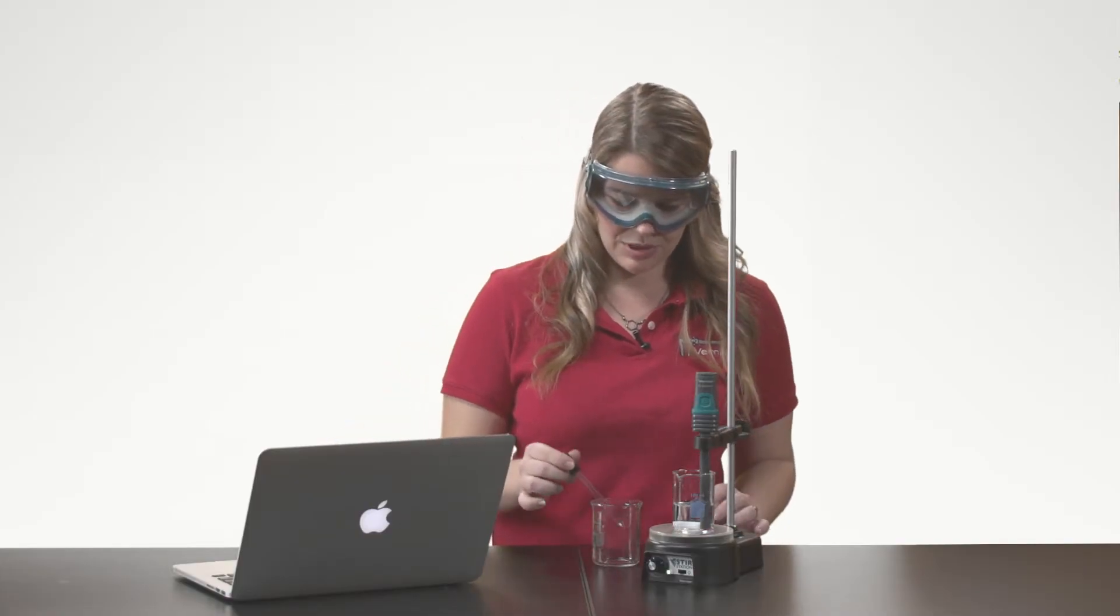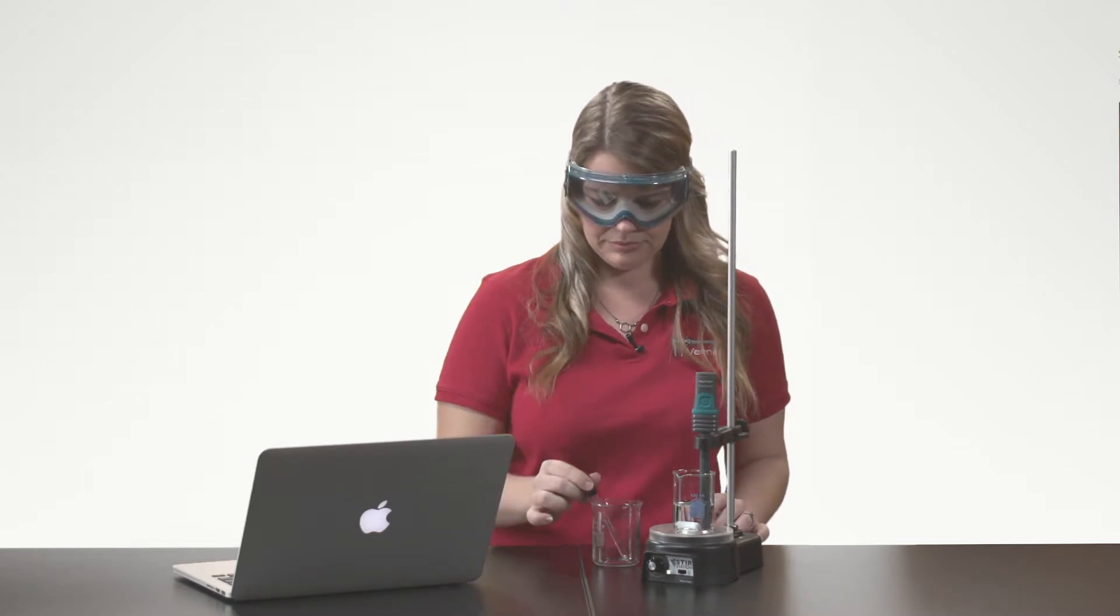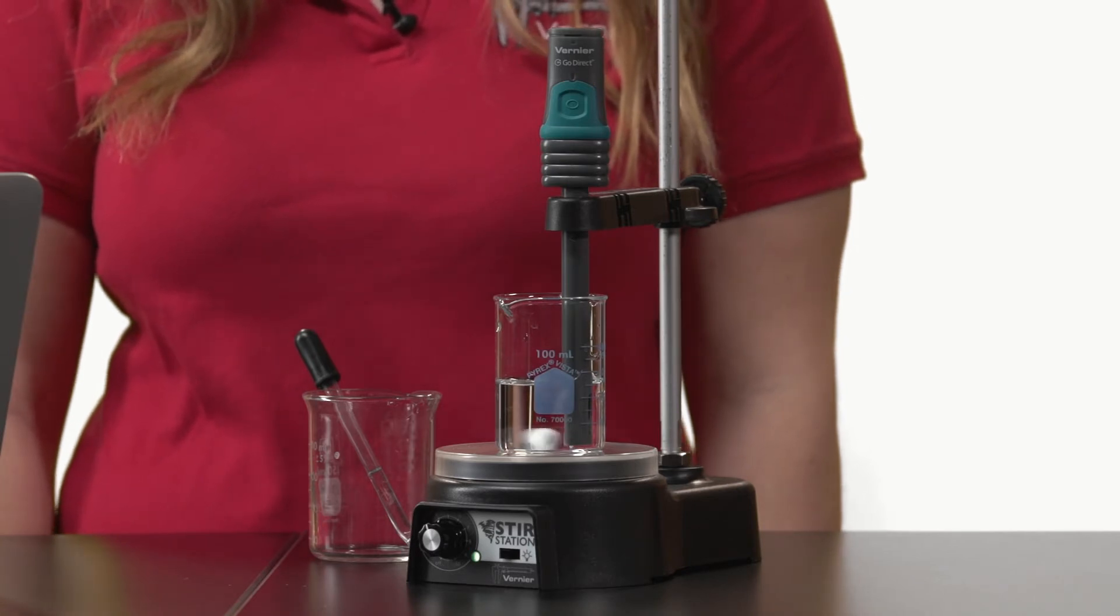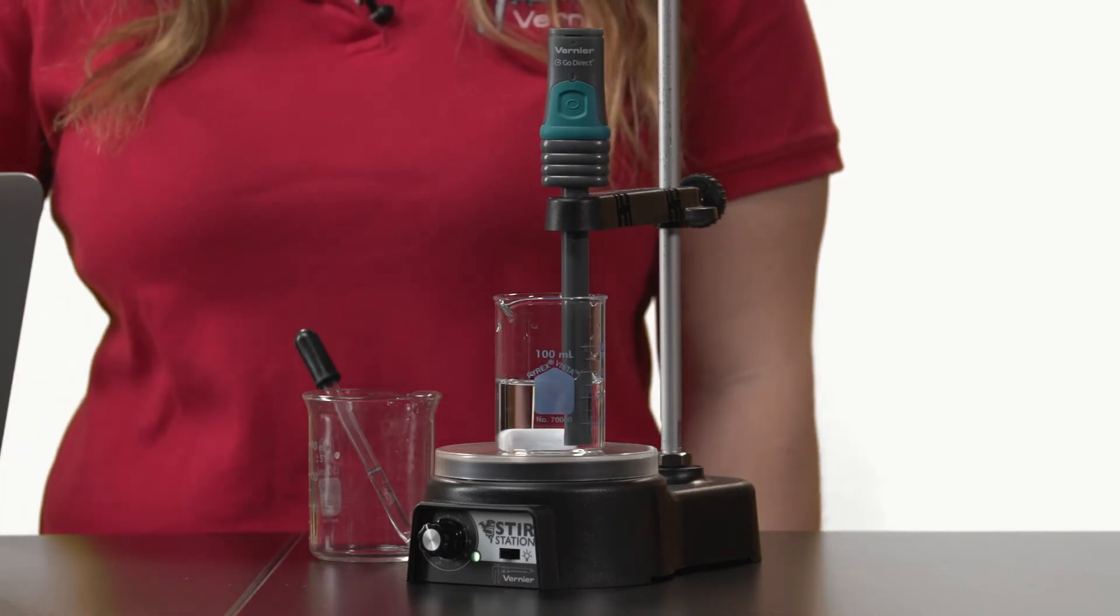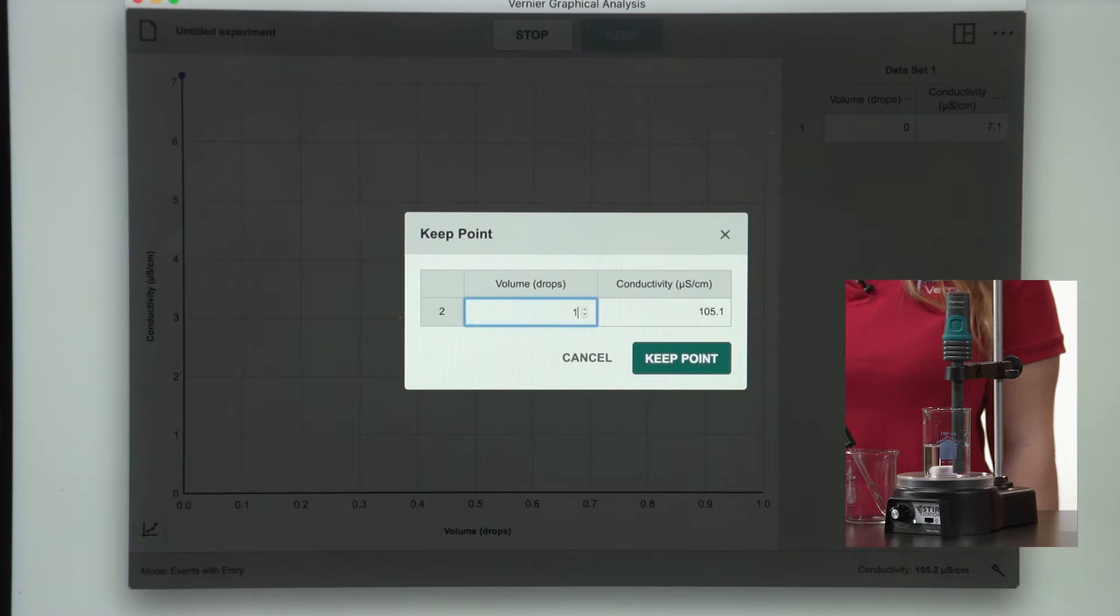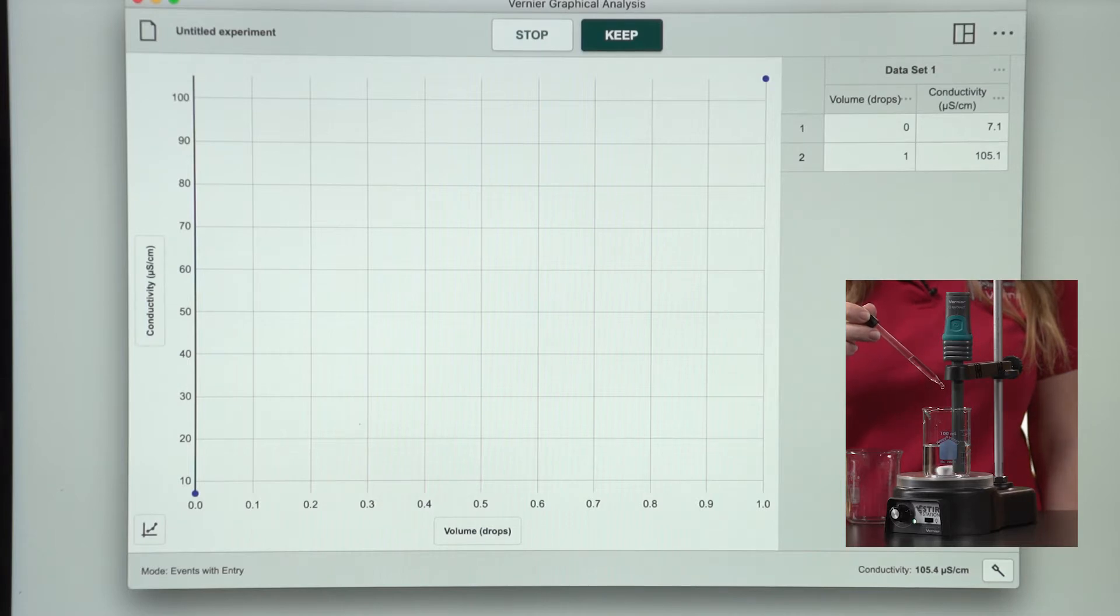Now I will add one drop of sodium chloride solution and make sure the solution is mixing. I will monitor the conductivity reading until it is stable, then select Keep and type one drop. I want to repeat this process for about five drops.